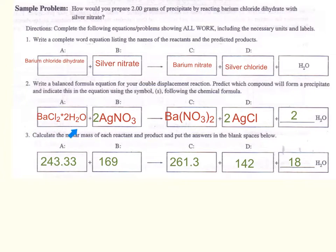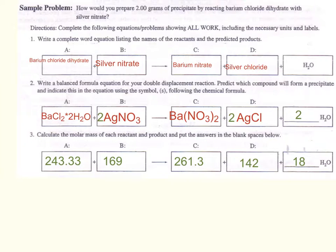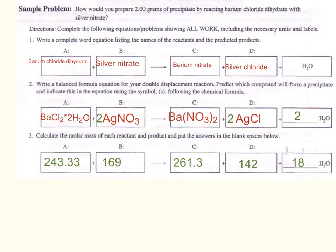As a reminder, when calculating the mass of barium chloride dihydrate, I find the mass of 1 barium plus 2 chlorines plus 2 waters. The mass of 2 waters is 36. Barium is 137, 2 chlorines is 2 × 35 = 70, and 2 waters is 2 × 18 = 36. So 137 + 70 + 36 gives us approximately 243 as our molecular mass.